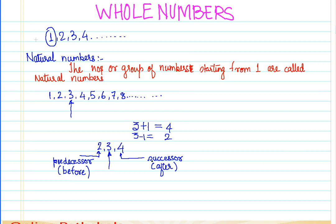For each and every number in the group of natural numbers you will have a successor and a predecessor. However, there is an exception to this rule — and that exception applies to the number one. The successor of one is two, but since our numbers start from one, there is no number before one. Hence, in the natural number system, we do not have any predecessor for the first number, which is one.